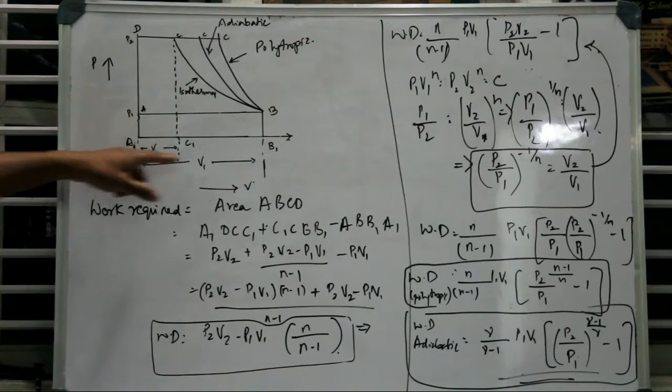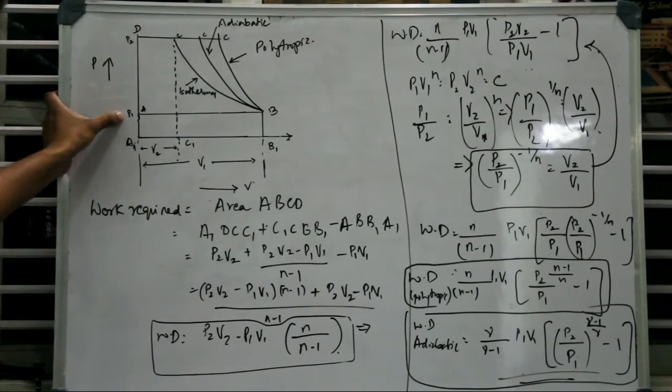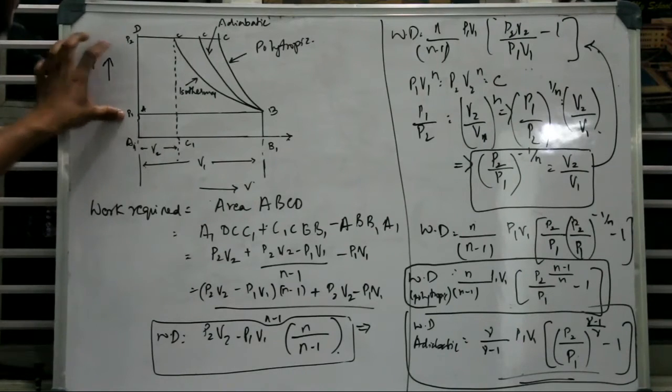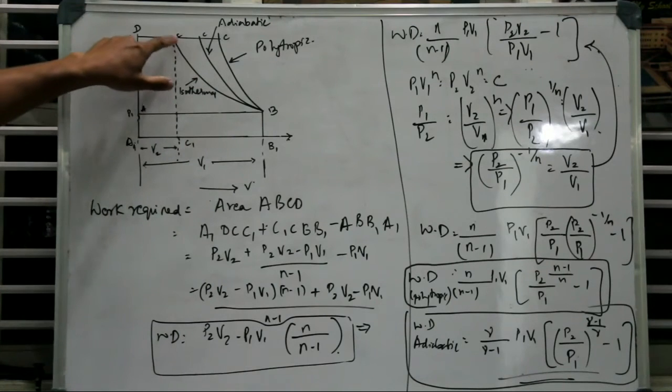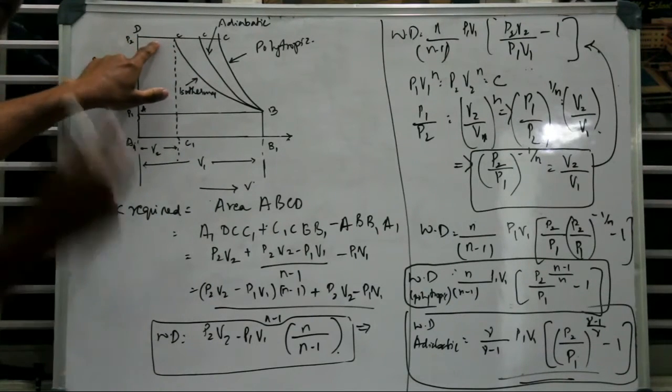If we look at the graph here, P1 is the atmospheric pressure or the suction pressure and P2 is the delivery pressure. This is the suction process, this is the compression process, and this is the delivery process.